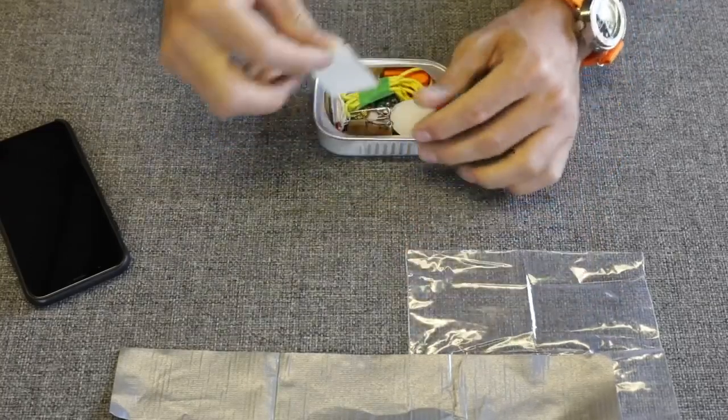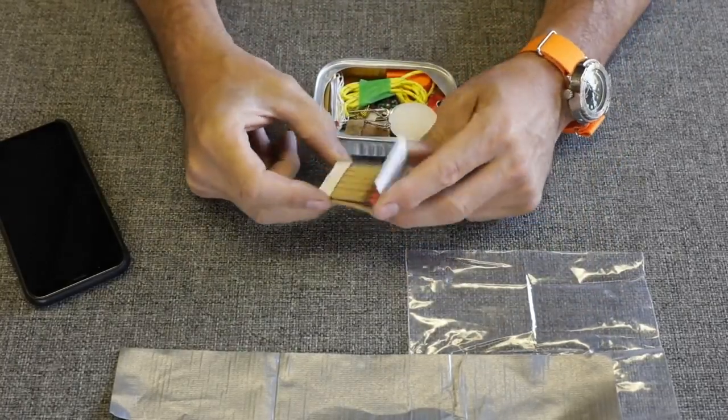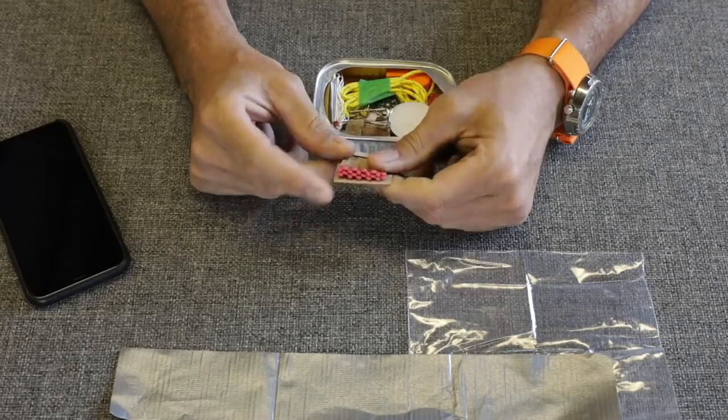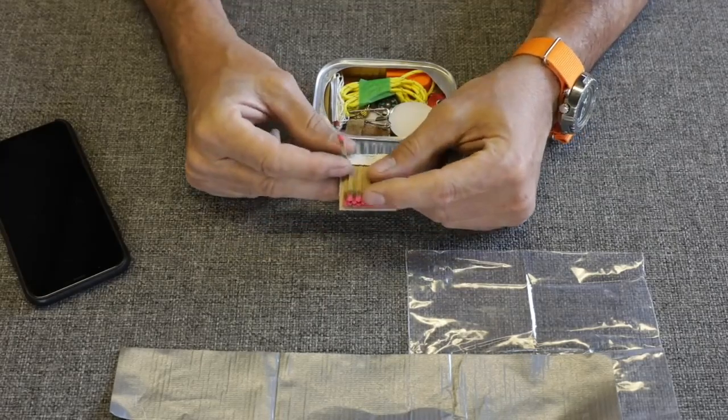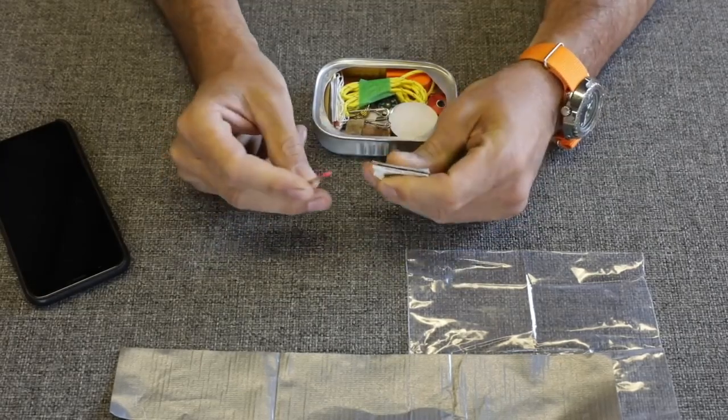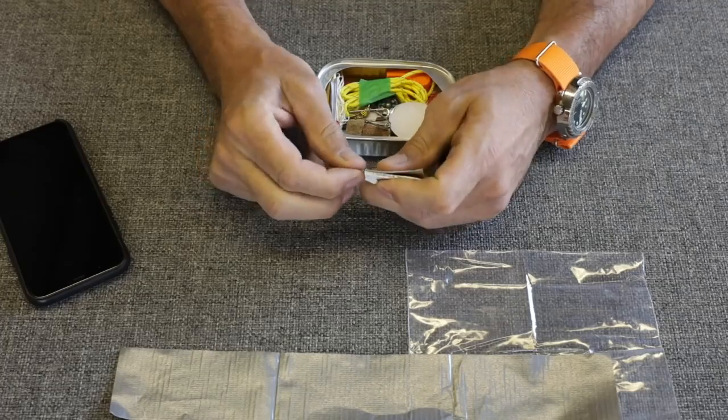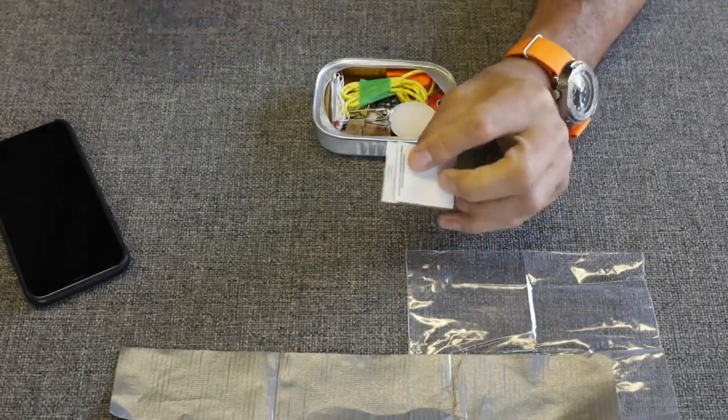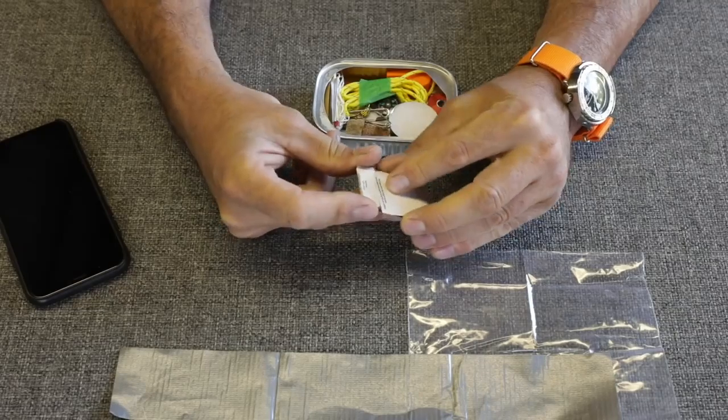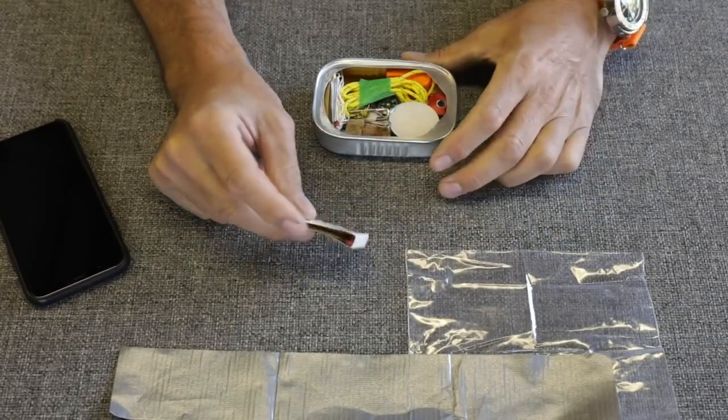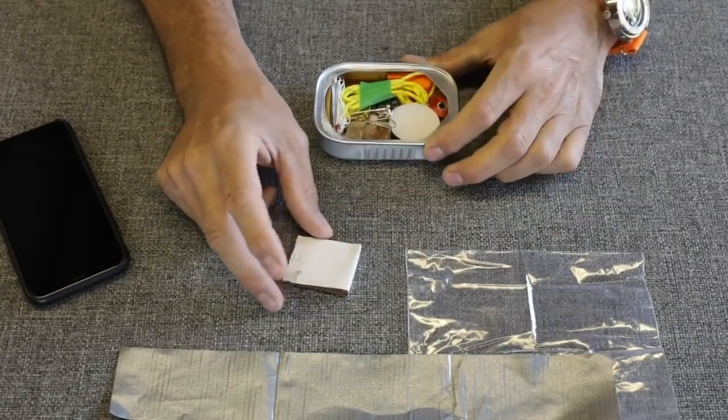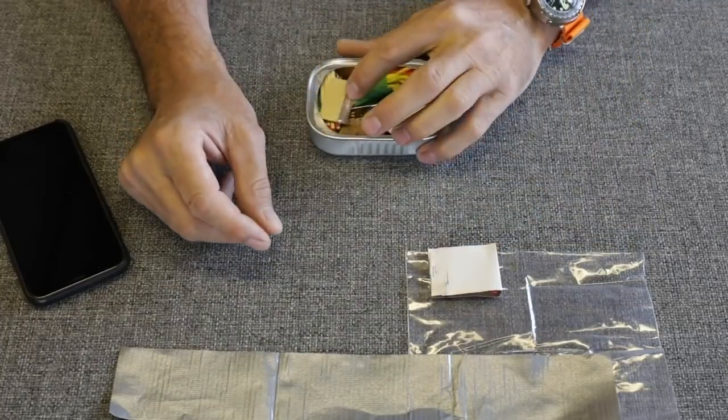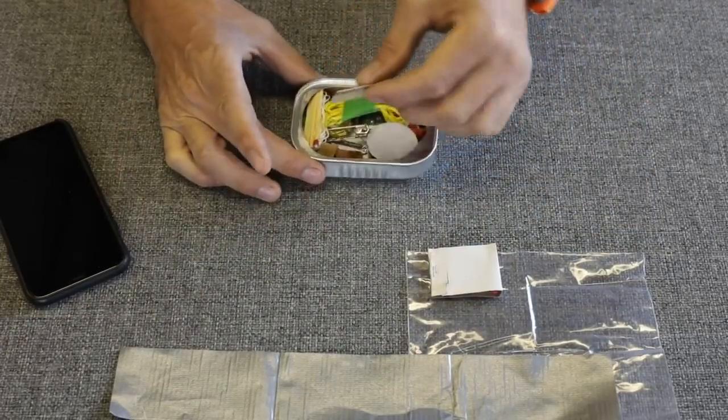Next we have paper matches, just your standard paper matches. Maybe wooden matches would be a better option. These are a little bit fragile when it comes to moist areas, but better than none. I think that's probably a good option. I don't know that you would even get the wooden matches inside of one of these containers. It's very small. This is actually pretty, a pretty cool kit.